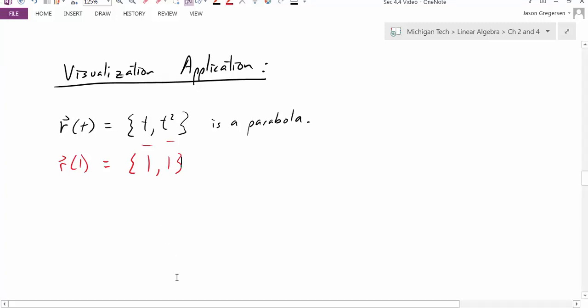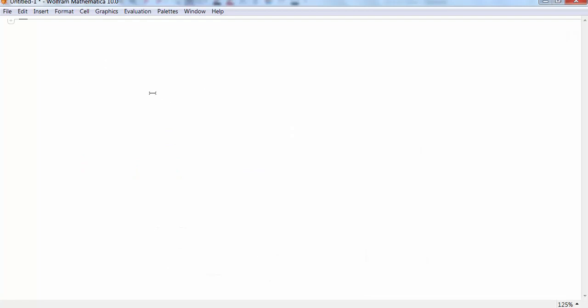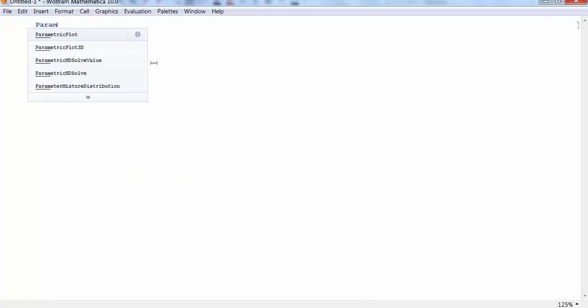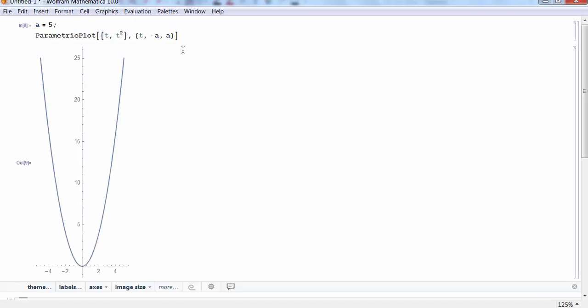And if I want to plot what this curve looks like, I can do that very quickly in Mathematica. I simply use the command parametric plot, and I'll put in the parametric equation, which would be t comma t squared. And then I'll give a range of t values to plot this curve through. So I'll go t from negative a to a, and I should probably define a to be some value, I'll call it 5 in this problem. And I can look at my parametric plot here.